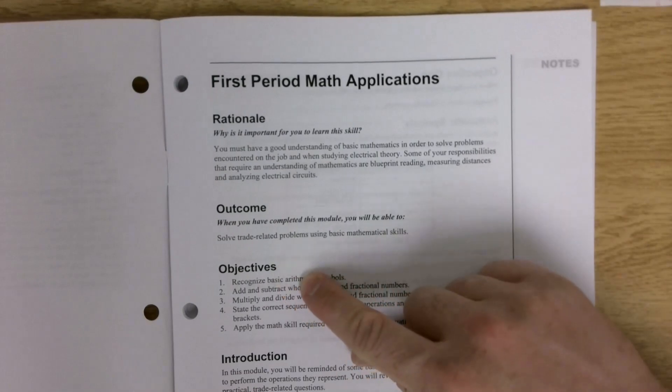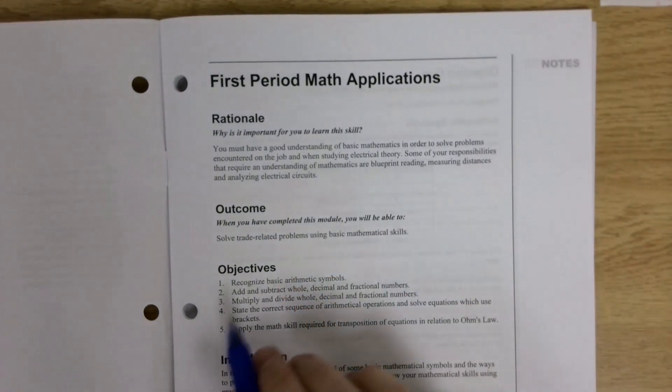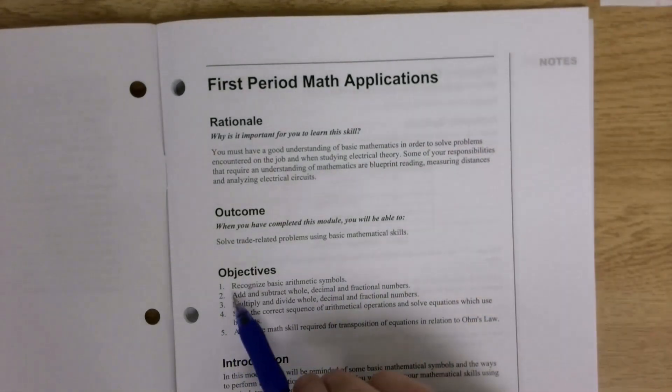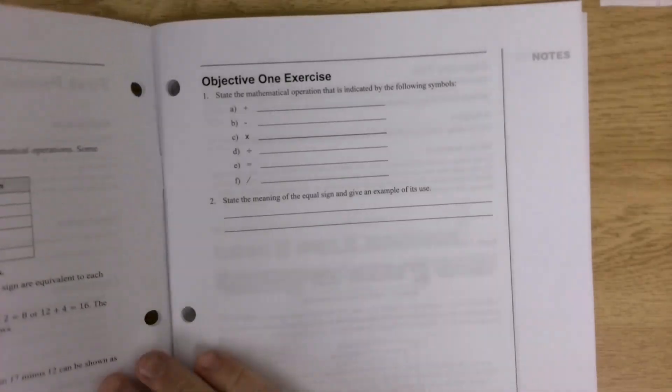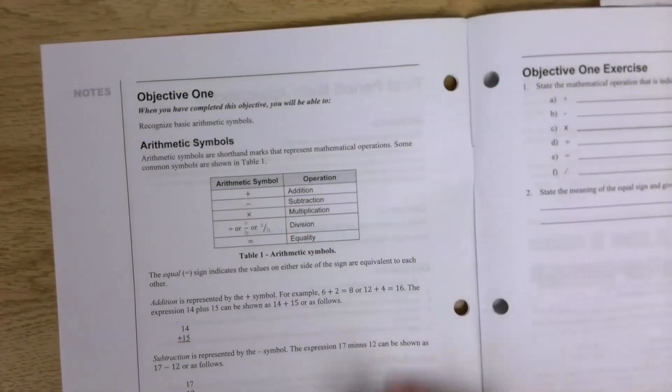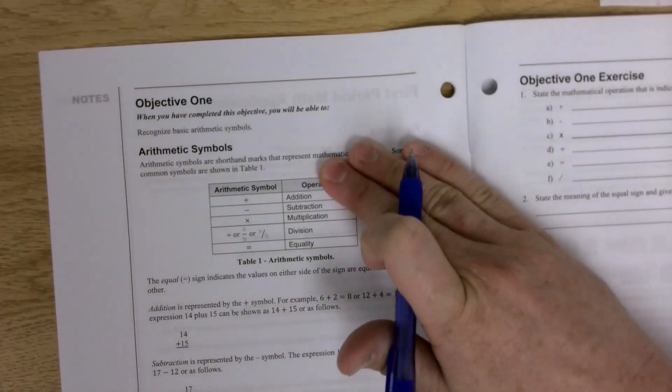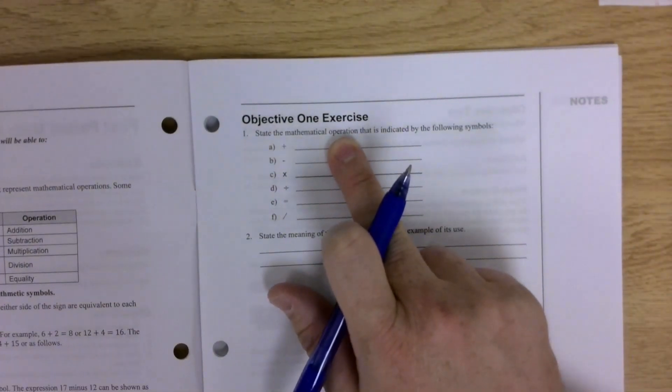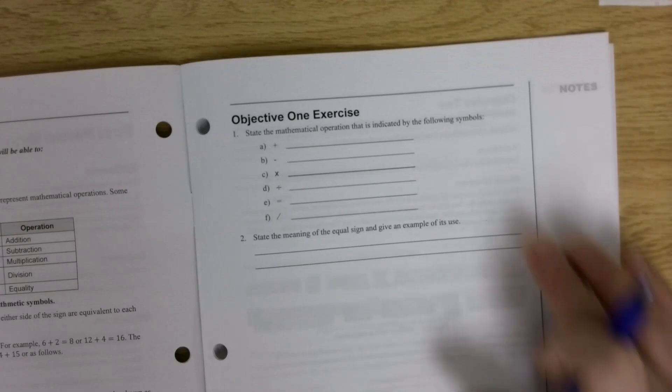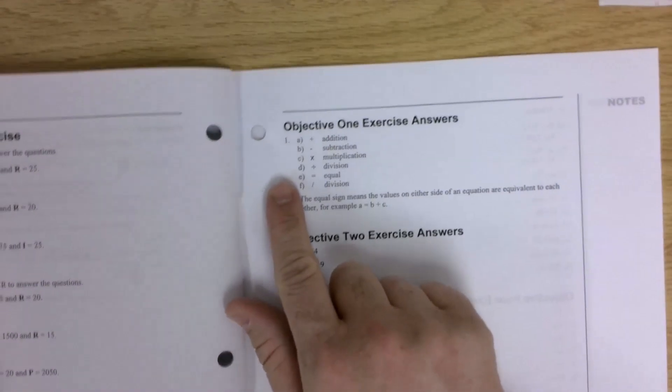As a first page, it's going to break down the objectives. Each of these objectives is a section of the module. The first objective is going to recognize basic arithmetic symbols or math symbols. Each objective has an informative section, and then it's going to have exercises or questions. Pretty straightforward process. Read the information, answer the questions, and then in the back of the module has the answers.